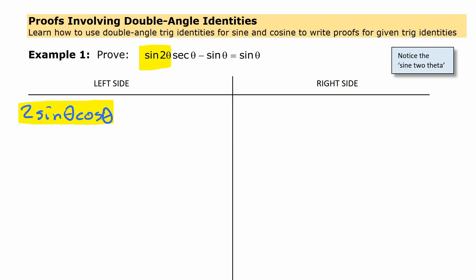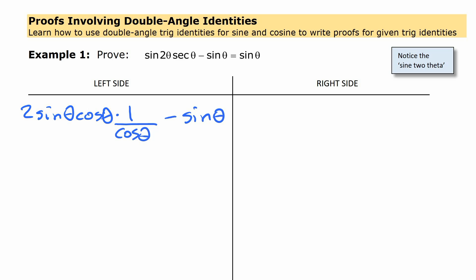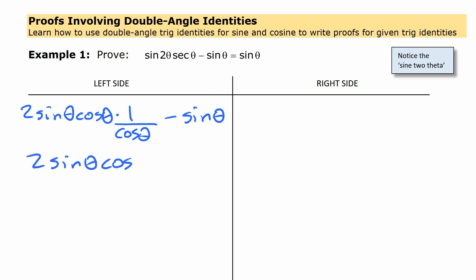There's only one double angle identity for sine, so there's not even a choice to make there. Now while I'm at it, I'm going to replace secant with 1 over cosine, and then put that on the end, minus sine theta. We get to that stage and we can see that we have cos theta here and this is times 1 over cos theta, which is the same as dividing by. So we can cross them out because they're going to cancel each other out. Or if you wanted to, you could write a step in there multiplying the whole thing — 2 sine theta cos theta over cos theta — and then divide them out.